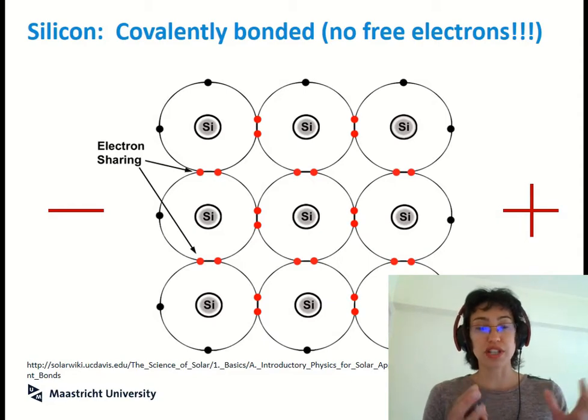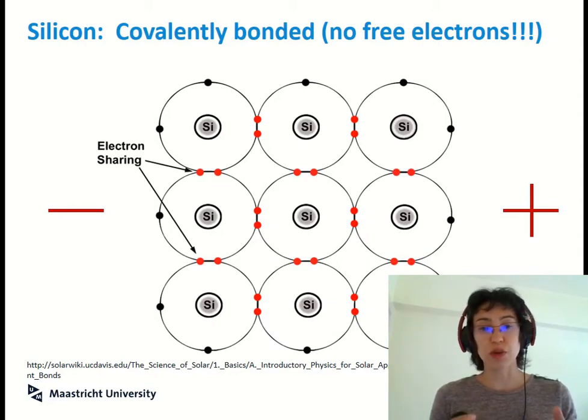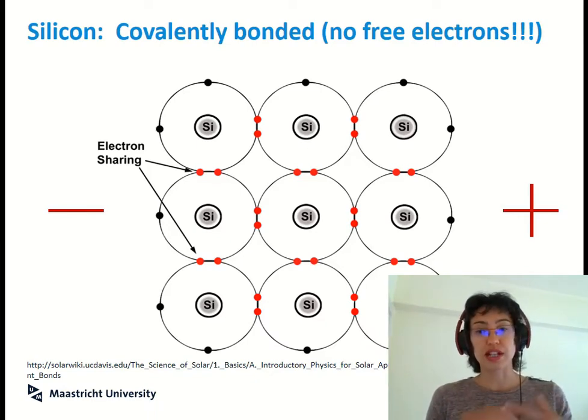So even if I were to apply a voltage difference or a potential difference across the material - I've got my battery or power supply, I make one side positive, one side negative - because all of those electrons are involved in bonding, there's nothing free to transfer charge across the material, so no current will flow.